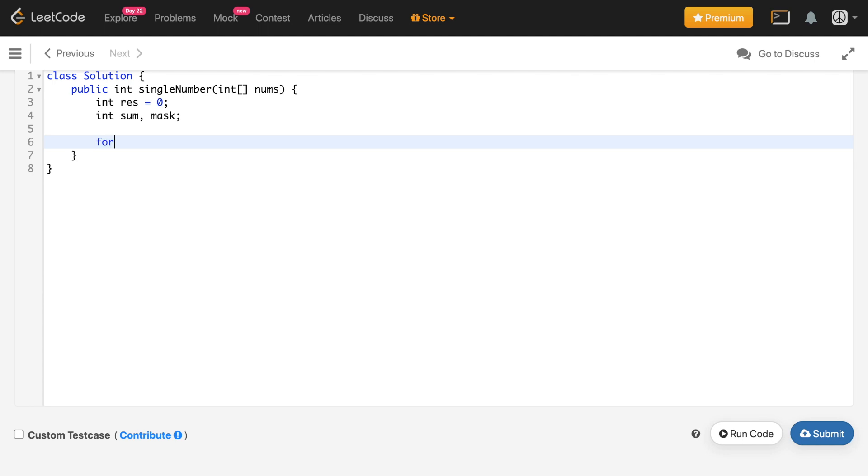Now since there are 32 bits, I'll iterate over each of the bit. So for int i equals 0, i less than 32, i plus plus. So the current mask is going to be equals to 1 left shift i and the sum is equals to 0.